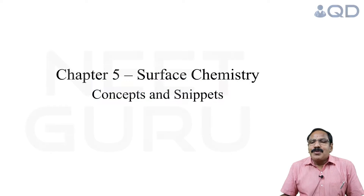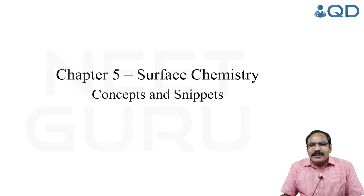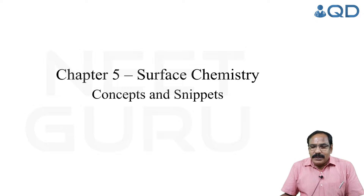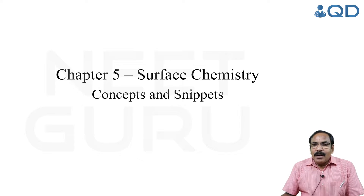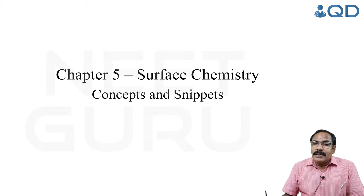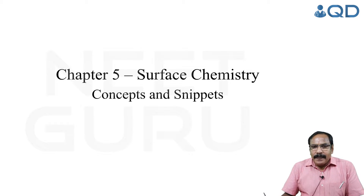Hi students, welcome to this concepts and snippets session. Today we are going to discuss a simple chapter called surface chemistry. It is the branch of chemistry which deals with physical and chemical changes that occur on the surface of solids. We live in a world with a lot of pollution, so how to minimize pollution and prevent ourselves from pollutants — all these are parts and parcel of surface chemistry. In surface chemistry, we have to deal with two terms: adsorption and absorption.